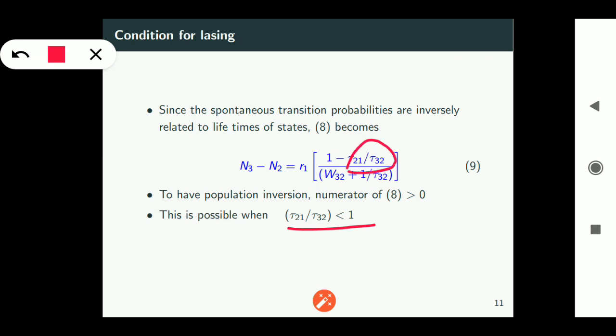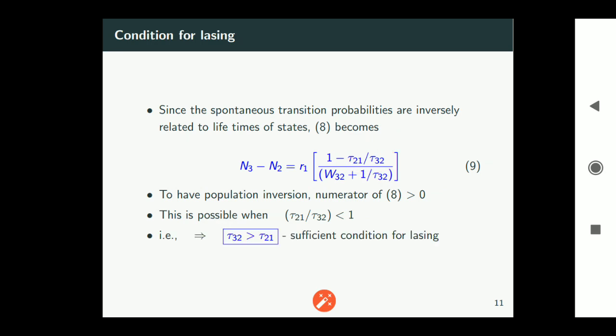If this is less than 1 then the numerator of equation 9 will be positive. So that we can write in other words as tau32 should be more than tau21 which is a sufficient condition for lasing.